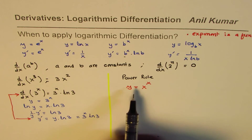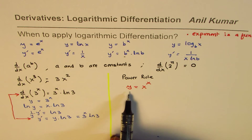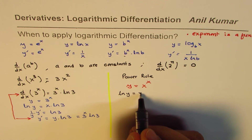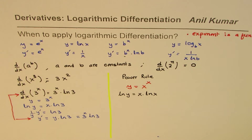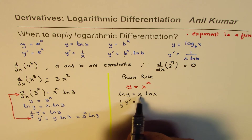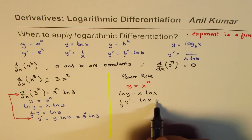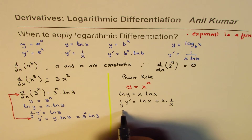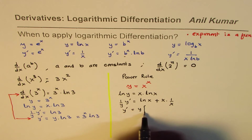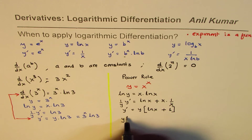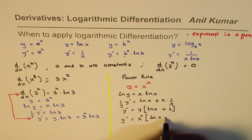For example, let's take y equals x to the power of x. To find y dash, we take logarithms on both sides. Taking natural log: ln y equals x times ln x, applying the log power rule. Taking the derivative: 1 over y times y prime equals ln x plus x times 1 over x, using the product rule. That simplifies to ln x plus 1. So y prime equals y times (ln x + 1), which is x to the power of x times (ln x + 1).